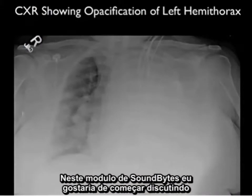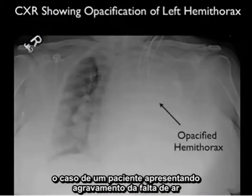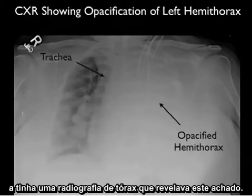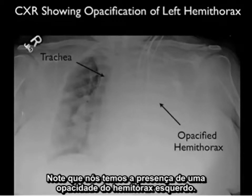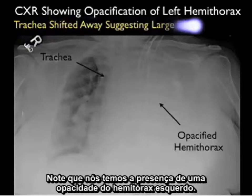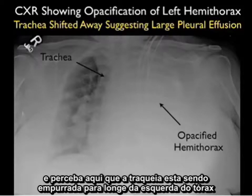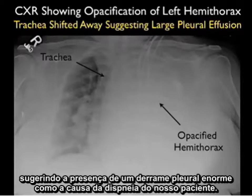In this Soundbites module, I'd like to begin by discussing the case of a patient who presented with worsening shortness of breath and had a chest x-ray which revealed this finding. Notice here we have the presence of an opacified left hemithorax, and notice that the trachea is pushed away from the left hemithorax, suggesting the presence of a very large pleural effusion as the cause of our patient's dyspnea.